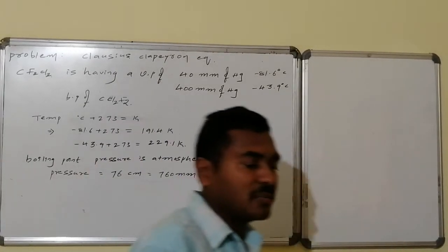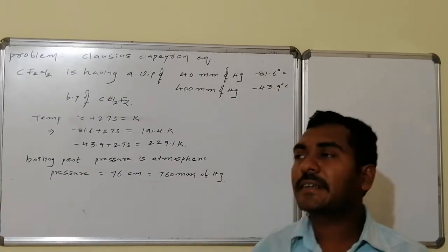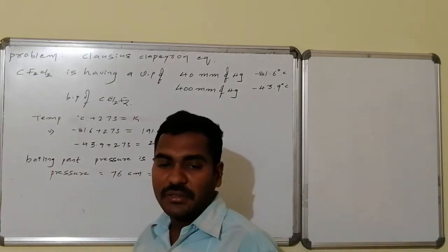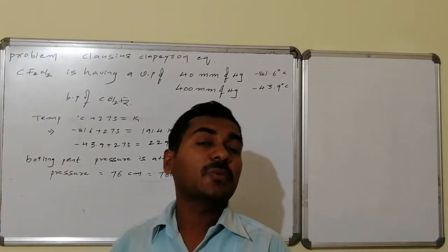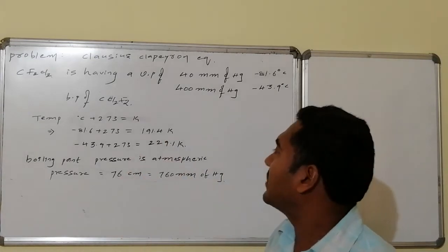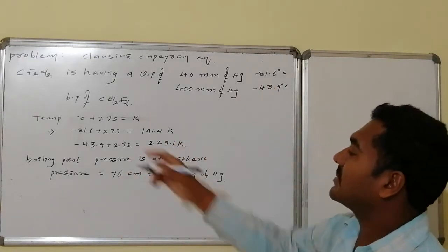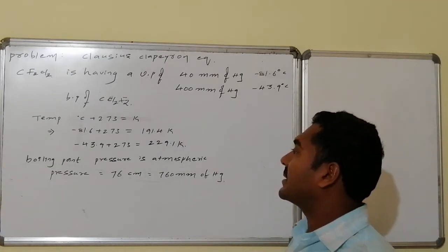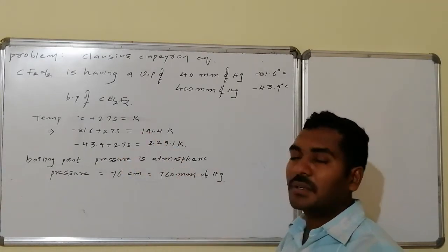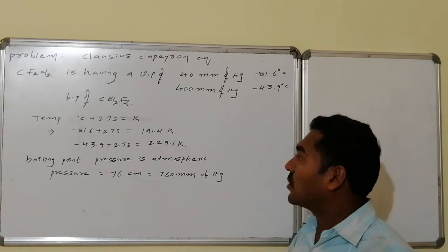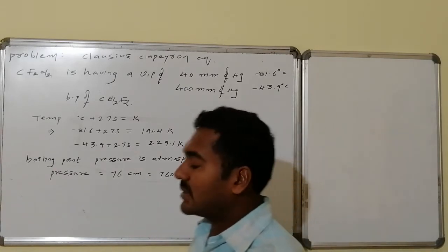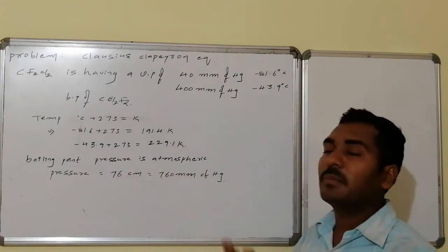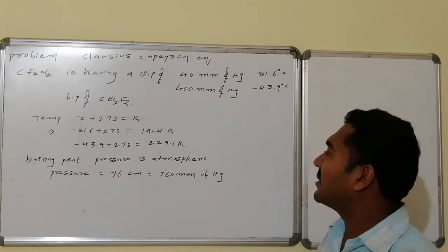To solve this problem, the temperatures in degrees centigrade must be converted to the Kelvin scale, where temperature in Kelvin equals degrees centigrade plus 273. So minus 81.6 plus 273 gives 191.4 Kelvin, and minus 43.9 plus 273 gives 229.1 Kelvin.